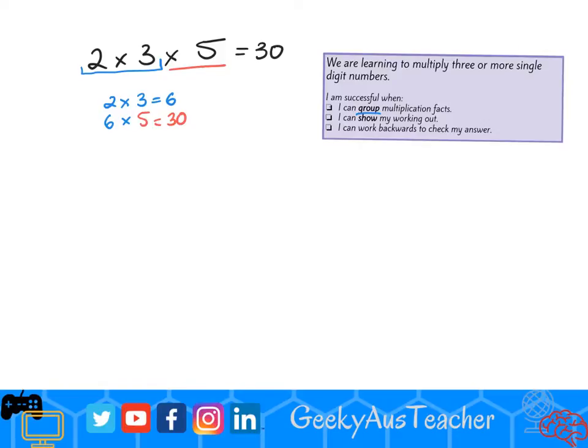I grouped my multiplication facts. I showed my working out. Now I need to work backwards to check my answer. I take thirty and if I divide that by five, it equals six. I then take six and divide that by three and that equals two.